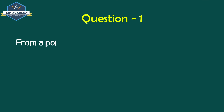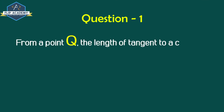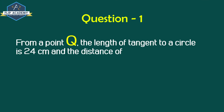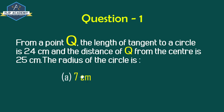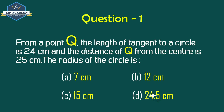From a point Q, the length of the tangent to a circle is 24 cm and the distance of Q from the center is 25 cm. The radius of the circle is: option A 7 cm, option B 12 cm, option C 15 cm, option D 24.5 cm.